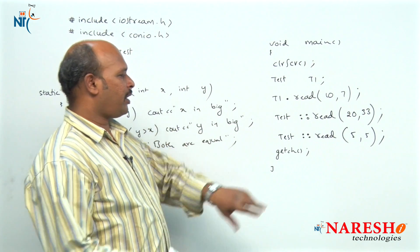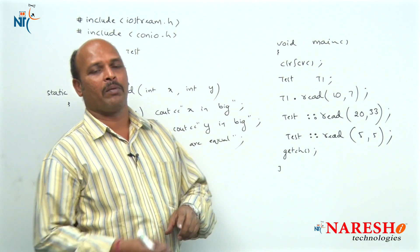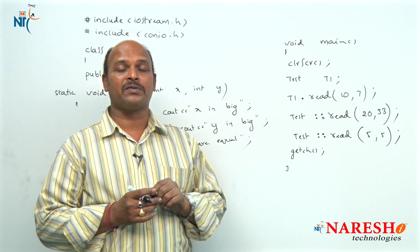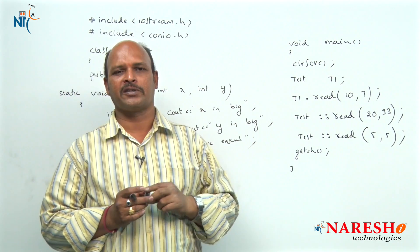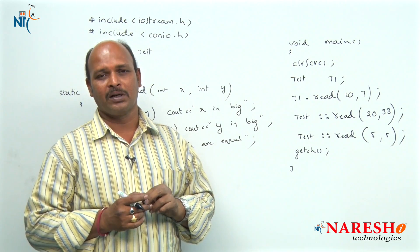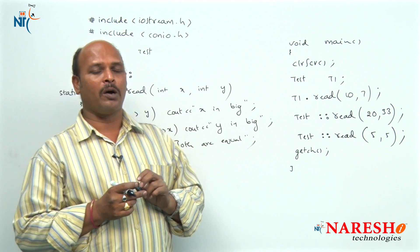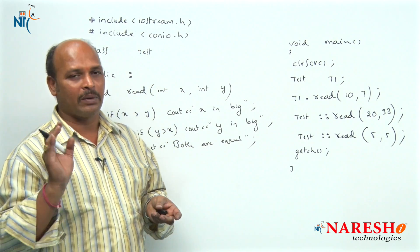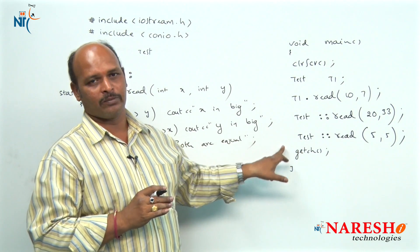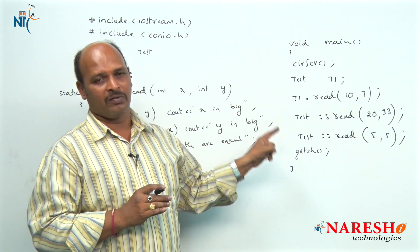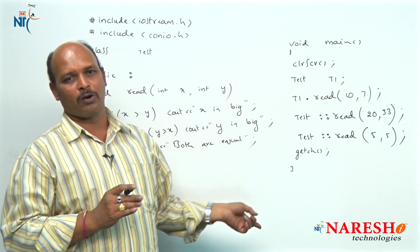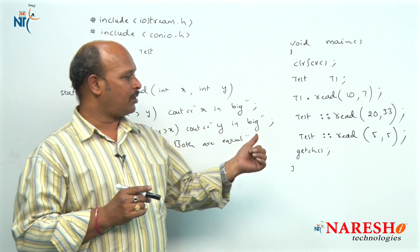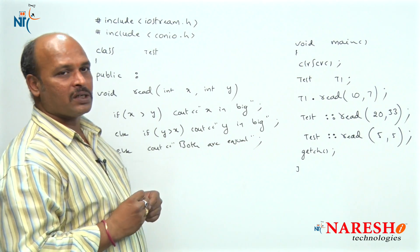The most important point here: in C++, normally to access member functions you must define an object of that class. But when it is a static member function, it becomes a class member, not an object member, so it can be accessed with the class name. When it is a non-static member function, calling it with the class name gives an error. Only static member functions can be accessed with both the class name and the object name.